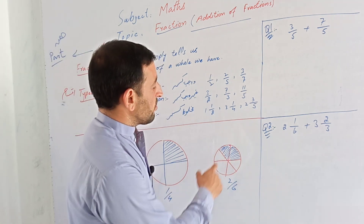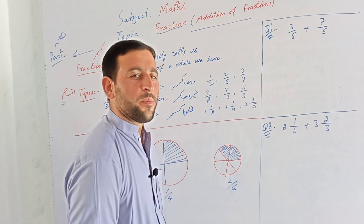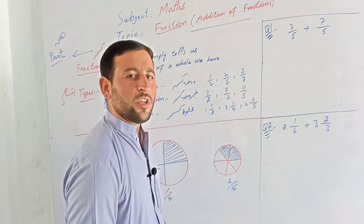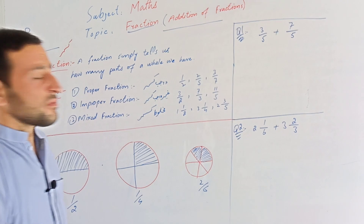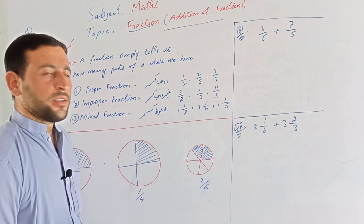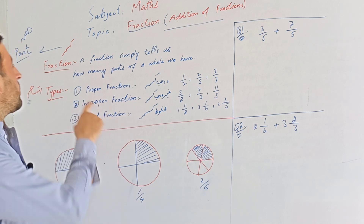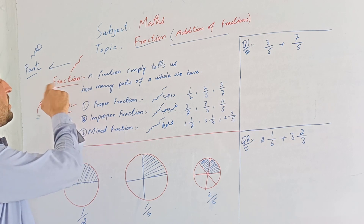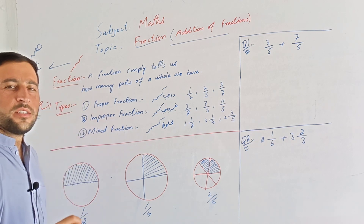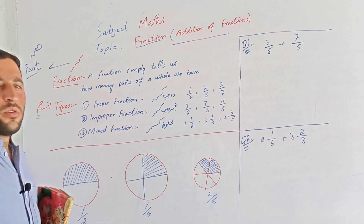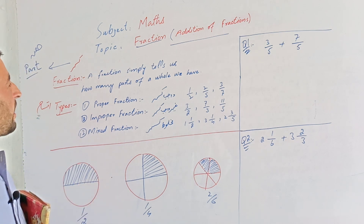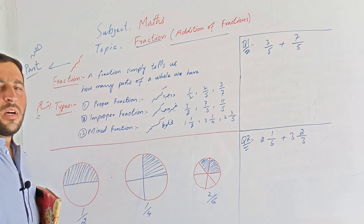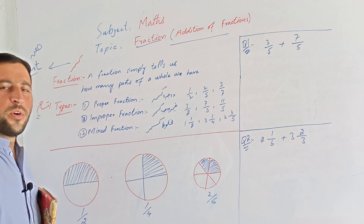The second example has 6 equal parts. The second part is shared, and there are 2 shared parts. The fraction is written as a fraction. This represents the structure of the fraction.